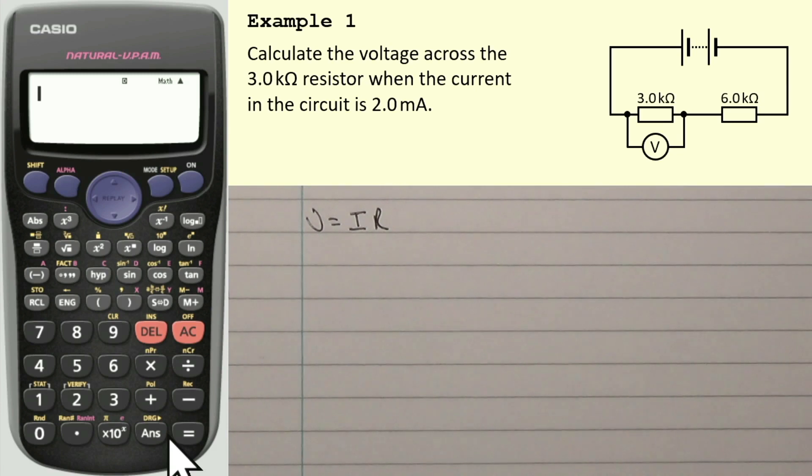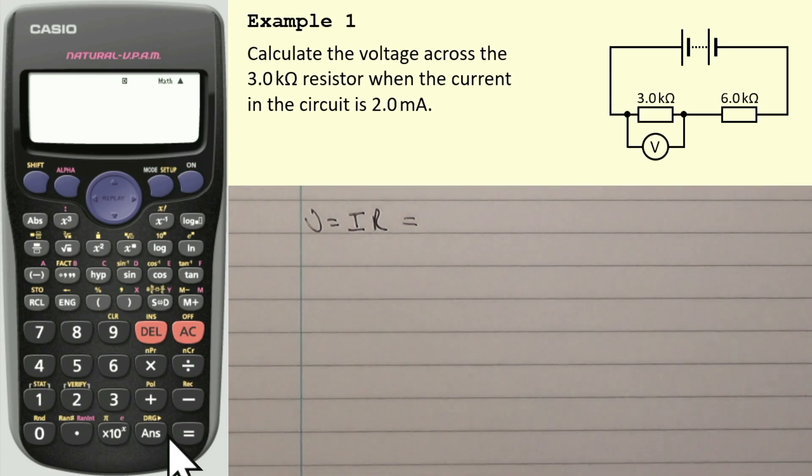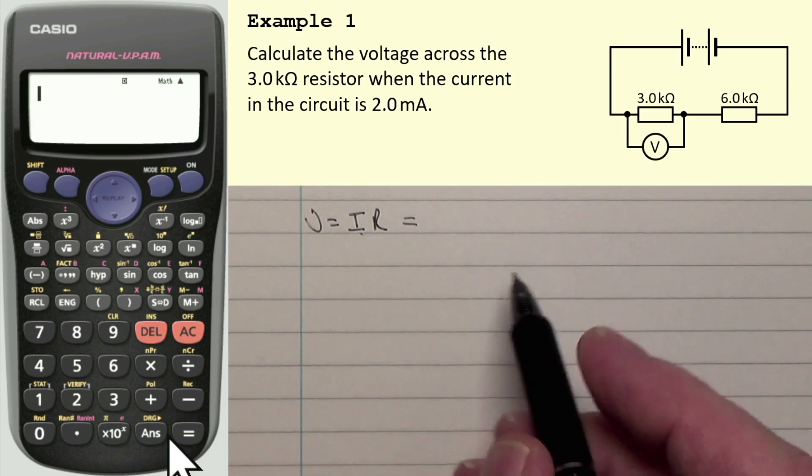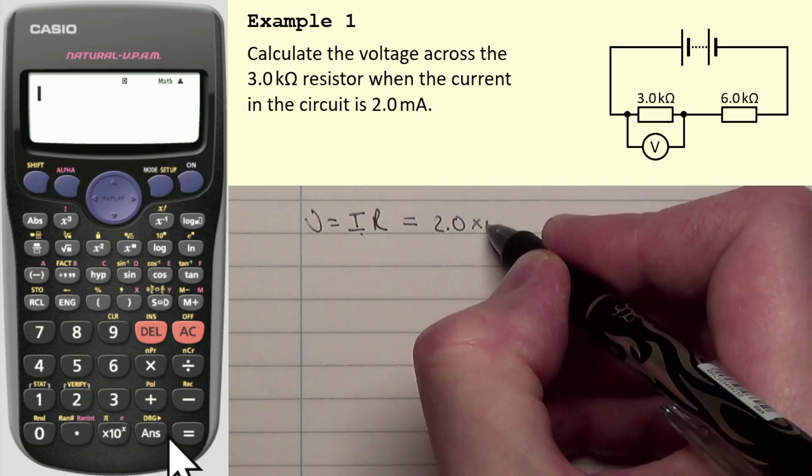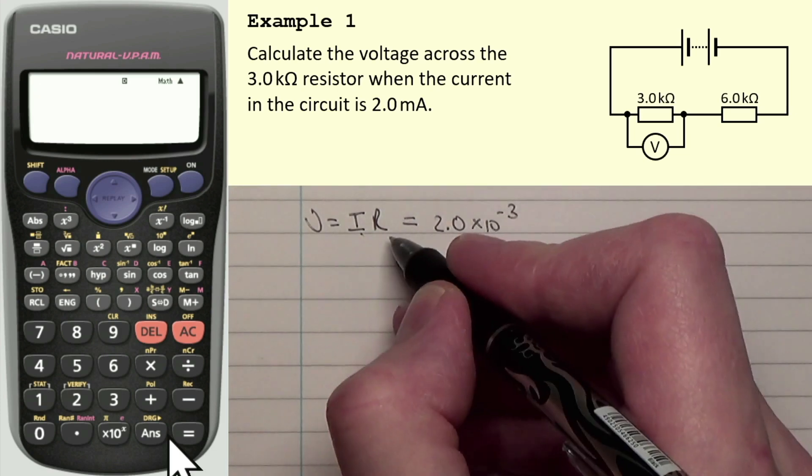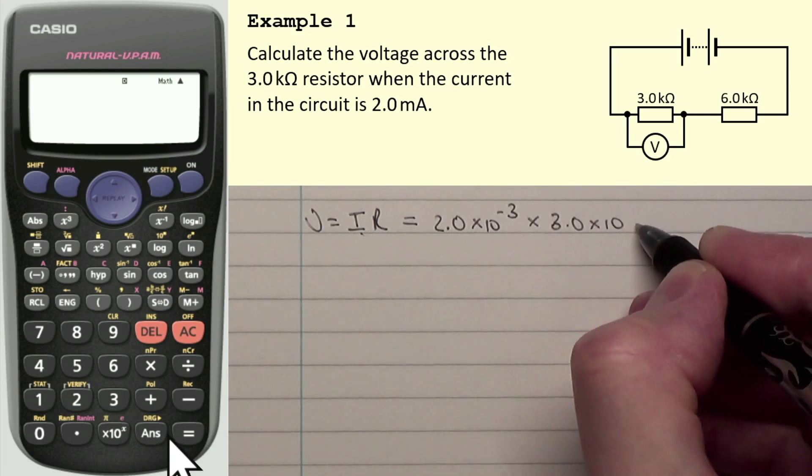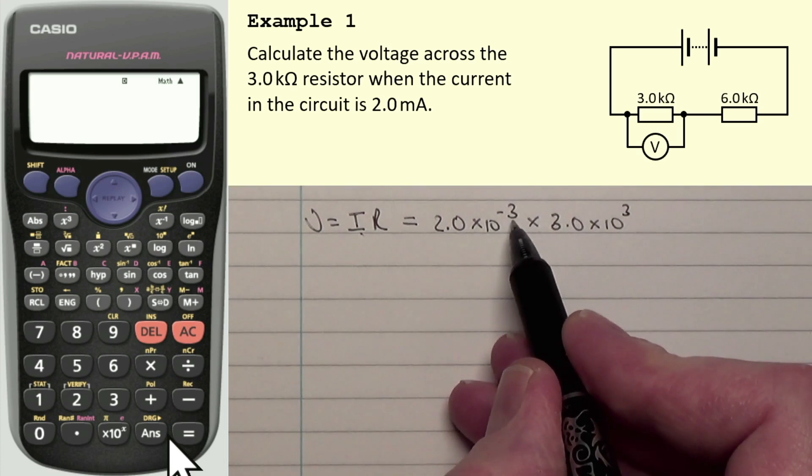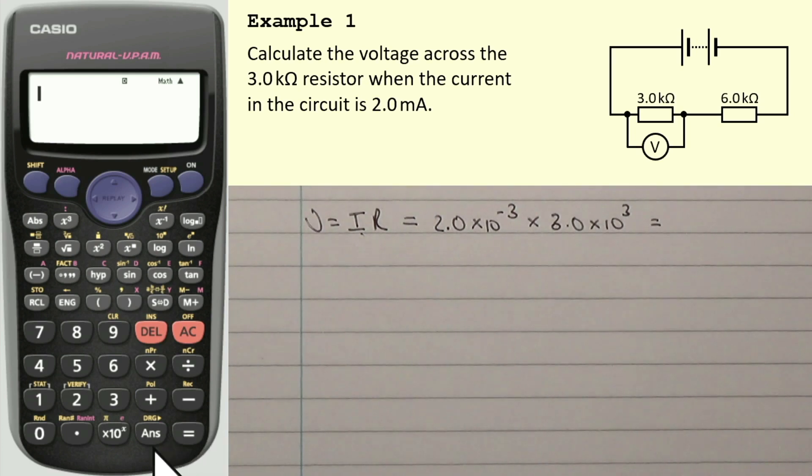But, there is something interesting with this question, and that's that if we completely ignored the prefixes, we actually end up with the correct answer. I'll talk about that later. We wouldn't get all the marks even though we end up with the correct answer. So, I'll show you the correct way to work this out first. Current is written as the letter I, and the current is 2.0 milli, which is times 10 to the negative 3. And, we're multiplying that by resistance, which is 3.0 times 10 to the power of 3. So, milli is times 10 to the minus 3, Kilo is times 10 to the power of 3.